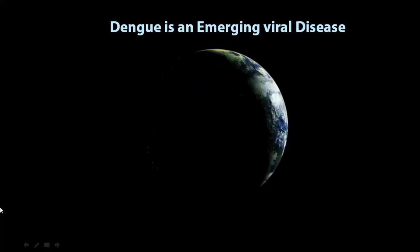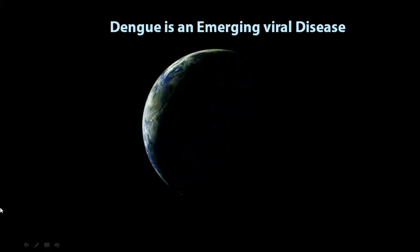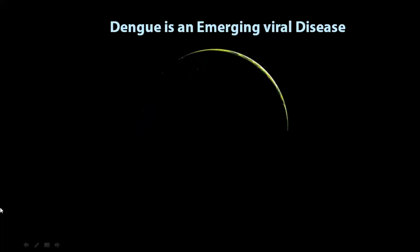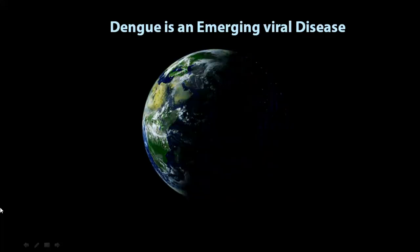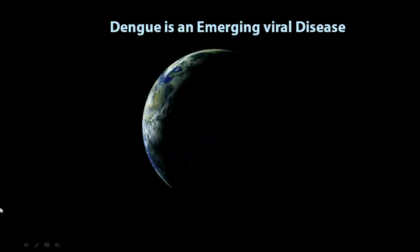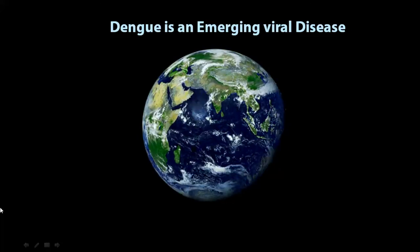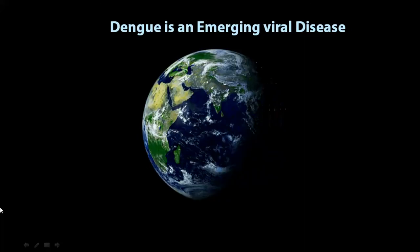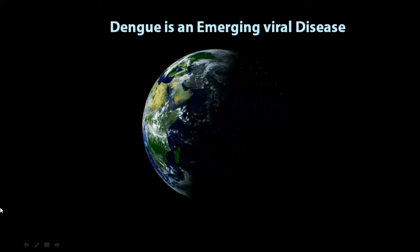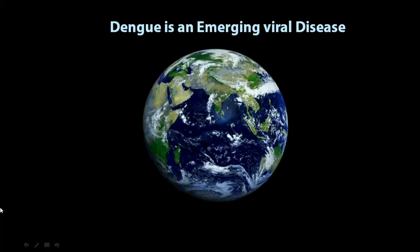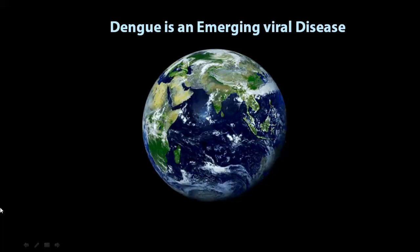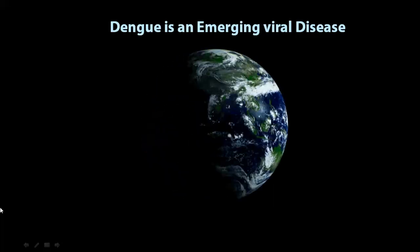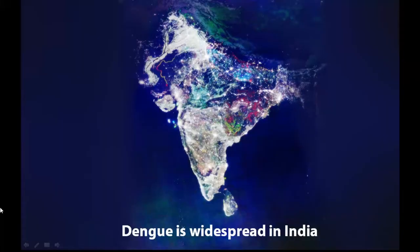Dengue is an emerging viral disease and the most rapidly spreading mosquito-borne viral disease in the world. In the last 50 years, incidence has increased 30-fold, with increasing geographic expansion to new countries and in the present decade from urban to rural settings. An estimated 50 million Dengue infections occur annually, and approximately 2.5 billion people live in Dengue endemic countries. Dengue is widely prevalent in India, and all four serotypes — and now a fifth newly discovered one — are found in the country.